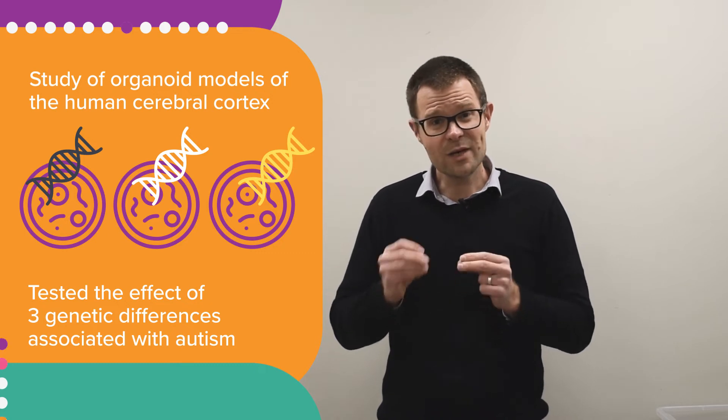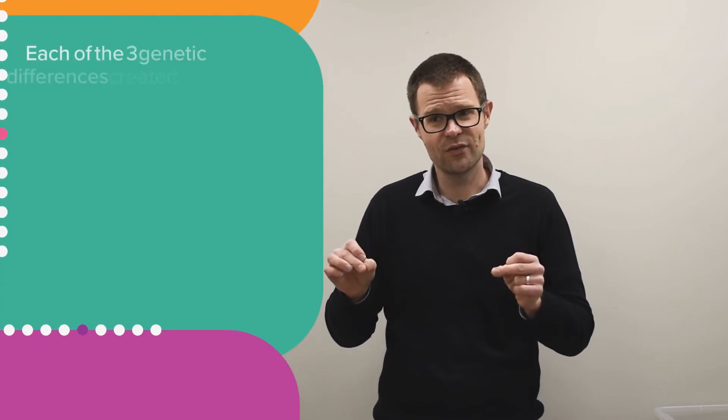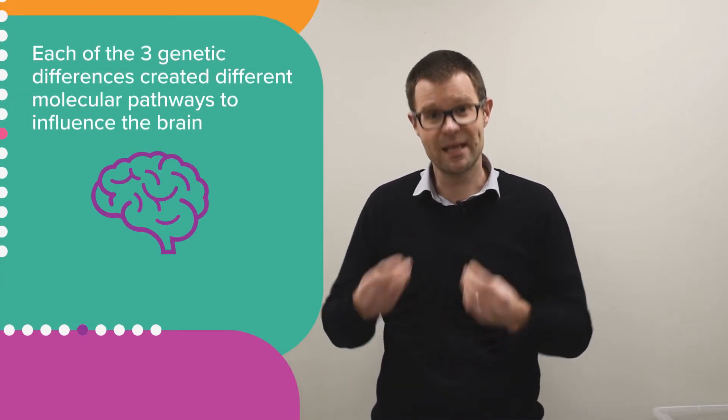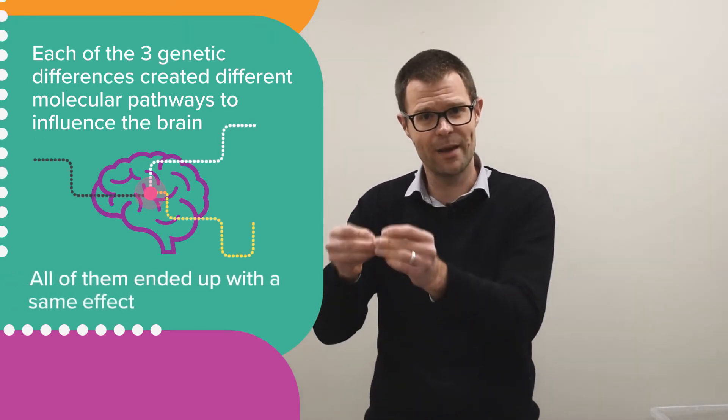Now the finding is really quite complex, but it boils down to this: each of those different genetic differences created different molecular pathways that influenced the brain, but all of them actually ended up with the same effect on that brain.